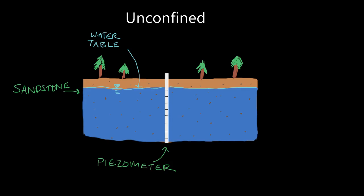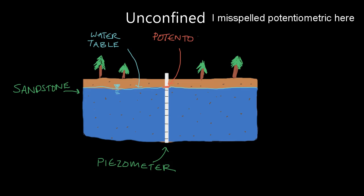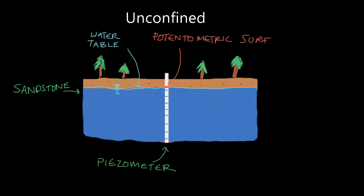In an unconfined aquifer, the potentiometric surface and the water table are the same — that is to say, the water elevation in the aquifer and the water elevation in the well are the same elevation. So there's our water table and here's our potentiometric surface inside the well — I'll highlight that in red. That's the potentiometric surface: the elevation to which the water is rising in the well. And in an unconfined aquifer, they're the same thing.